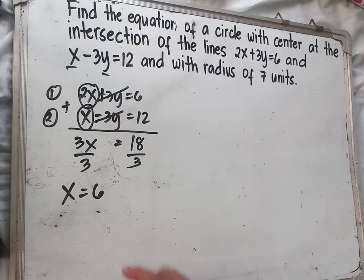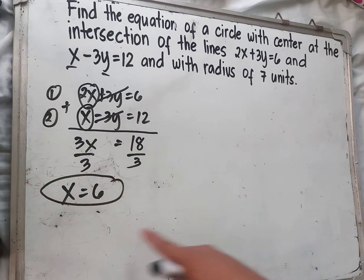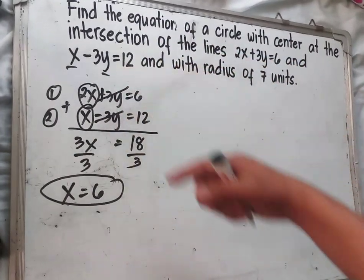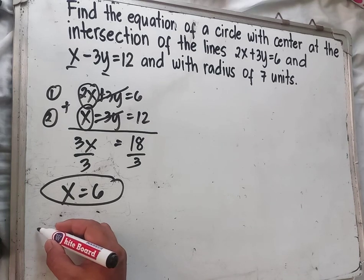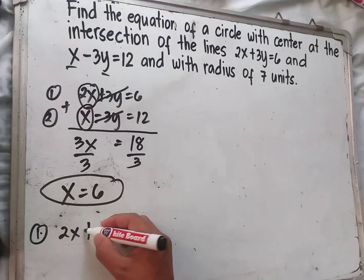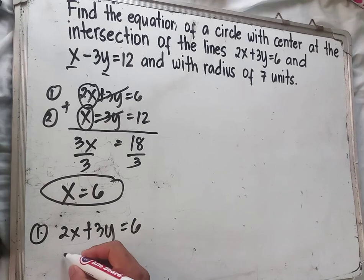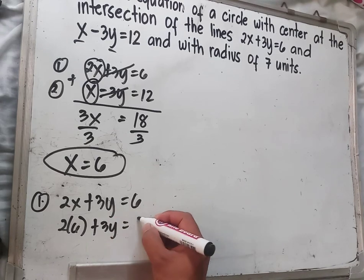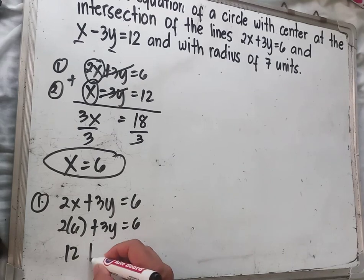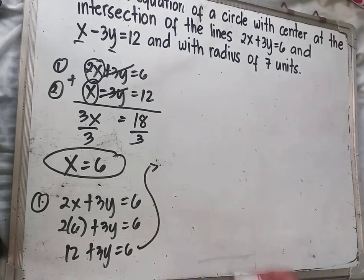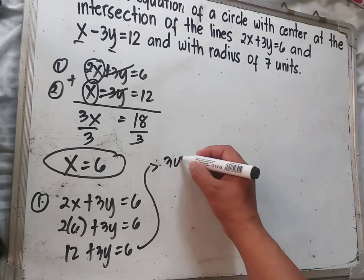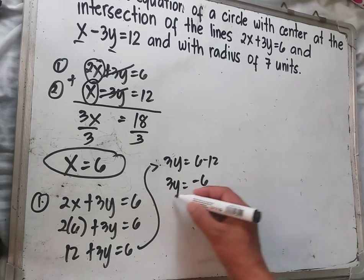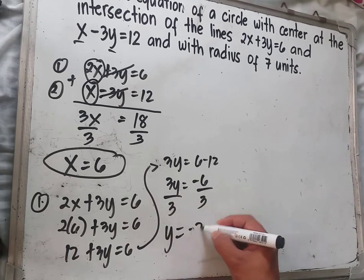Now that we have the value of x, we find the value of y. Since x equals 6, substitute into Equation 1: 2x plus 3y equals 6 becomes 2 times 6 plus 3y equals 6, so 12 plus 3y equals 6. Then 3y equals 6 minus 12, which gives 3y equals negative 6. Dividing both sides by 3, y equals negative 2.